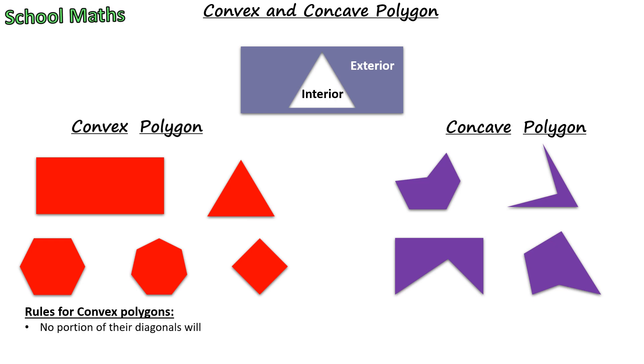First rule: no portion of their diagonals will touch their exterior surface. Second rule: line segment joining any two different vertices lies wholly in the interior of it. If the mentioned rule does not match the shapes,